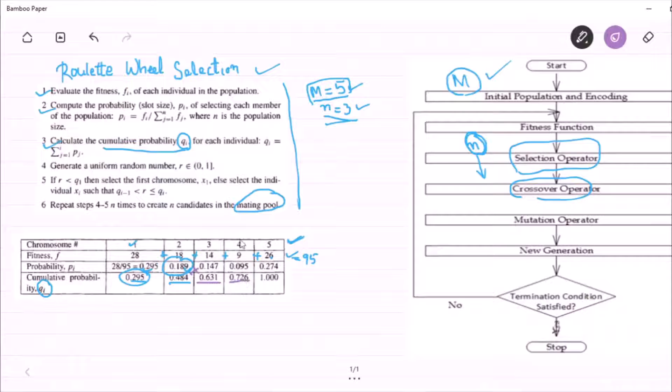Now, the cumulative probability of individual 4 is 0.631 plus 0.095. And eventually, the cumulative probability of this is 0.726 plus 0.274.